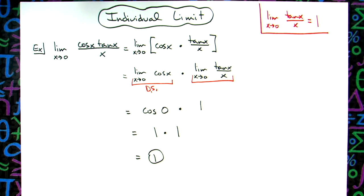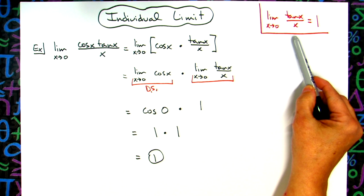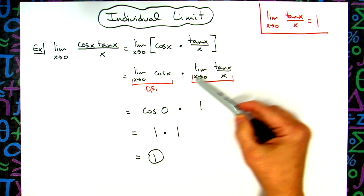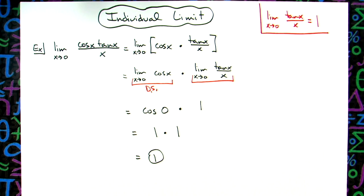So a pretty straightforward limit as long as you are using some of these limit properties that you know, and then using the property that when you've got two functions, you can take the limit of those individually.